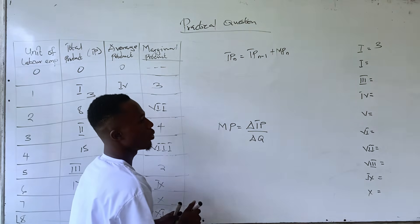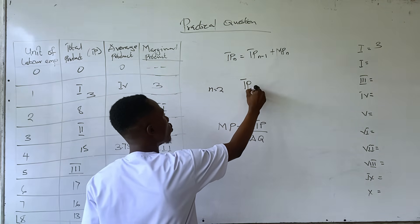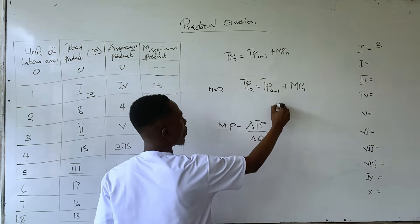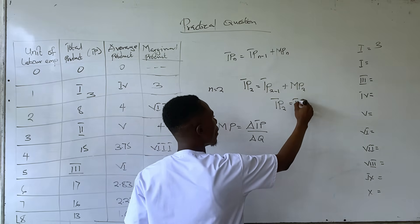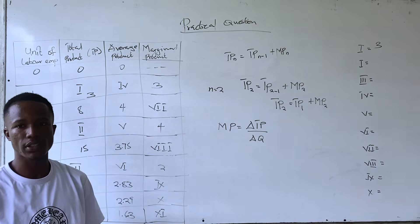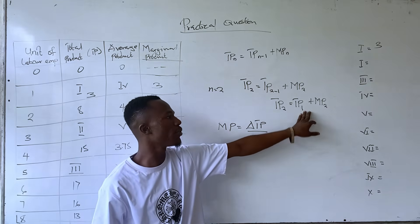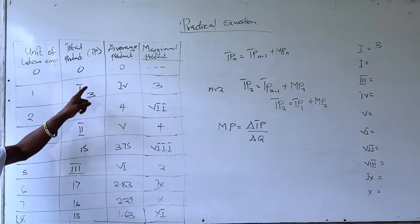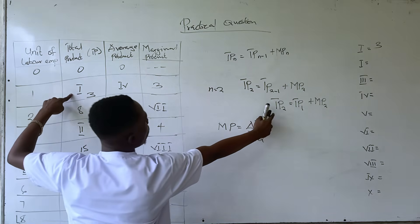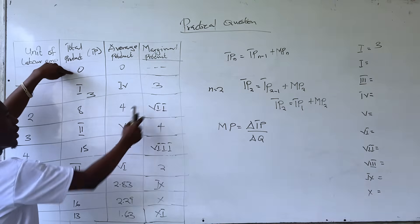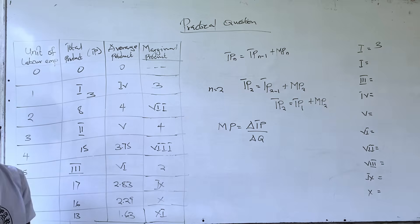So if n = 2, then TP₂ = TP₁ + MP₂. The current total product equals the previous total product plus the current marginal product. For example, here it is 0 + 3, giving you 3. That is the total product at that level.